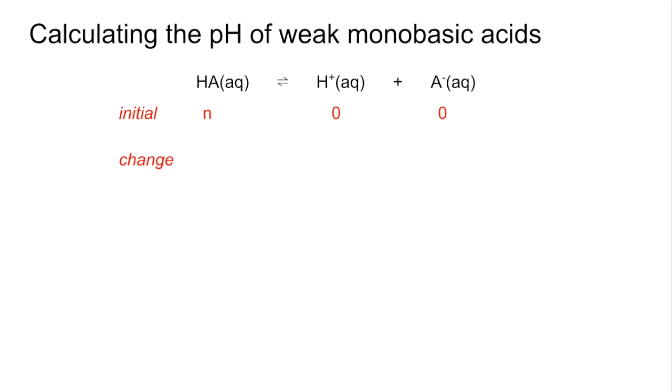Let's say there's a change. So x of it dissociates. So we'd have a loss of x moles of HA, but we're going to have a gain of x moles of H plus and of A minus. So at equilibrium, we're going to have n minus x of the acid, x of the H plus ions and x of the A minus ions.